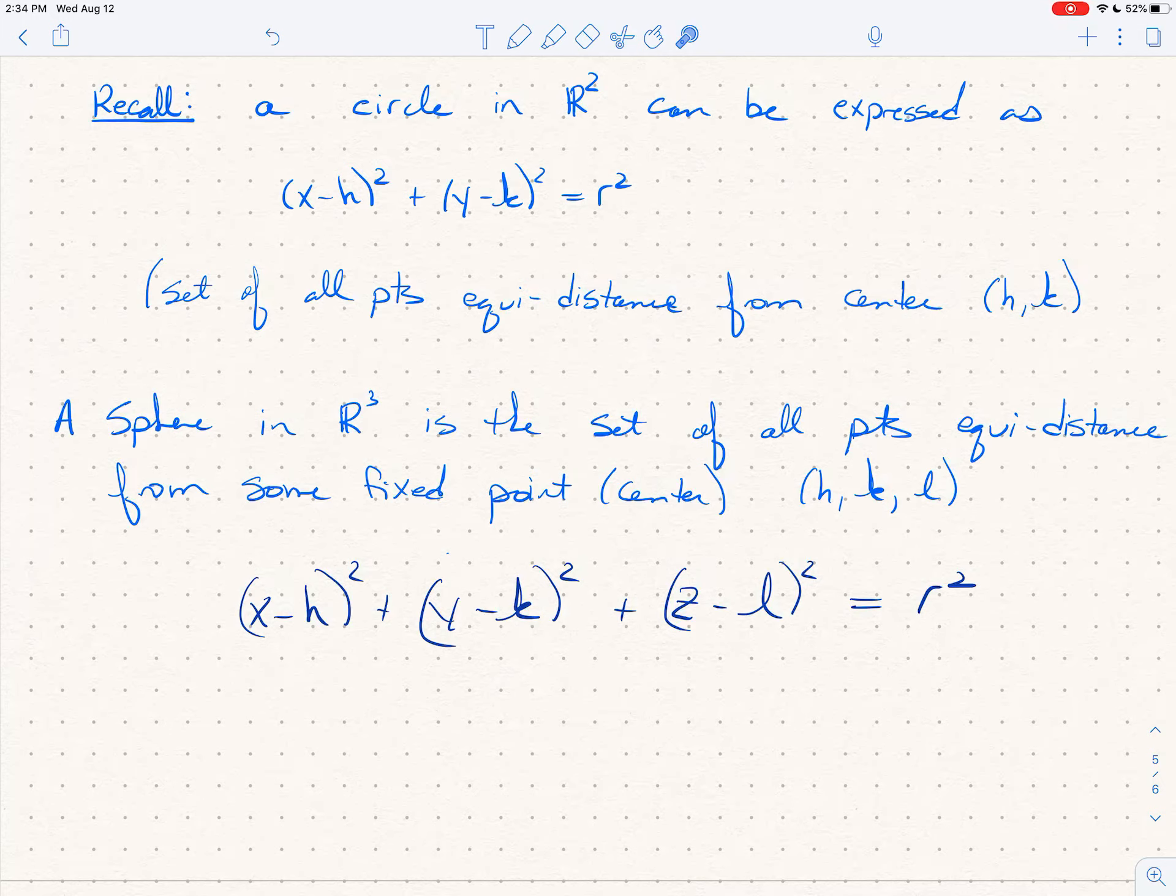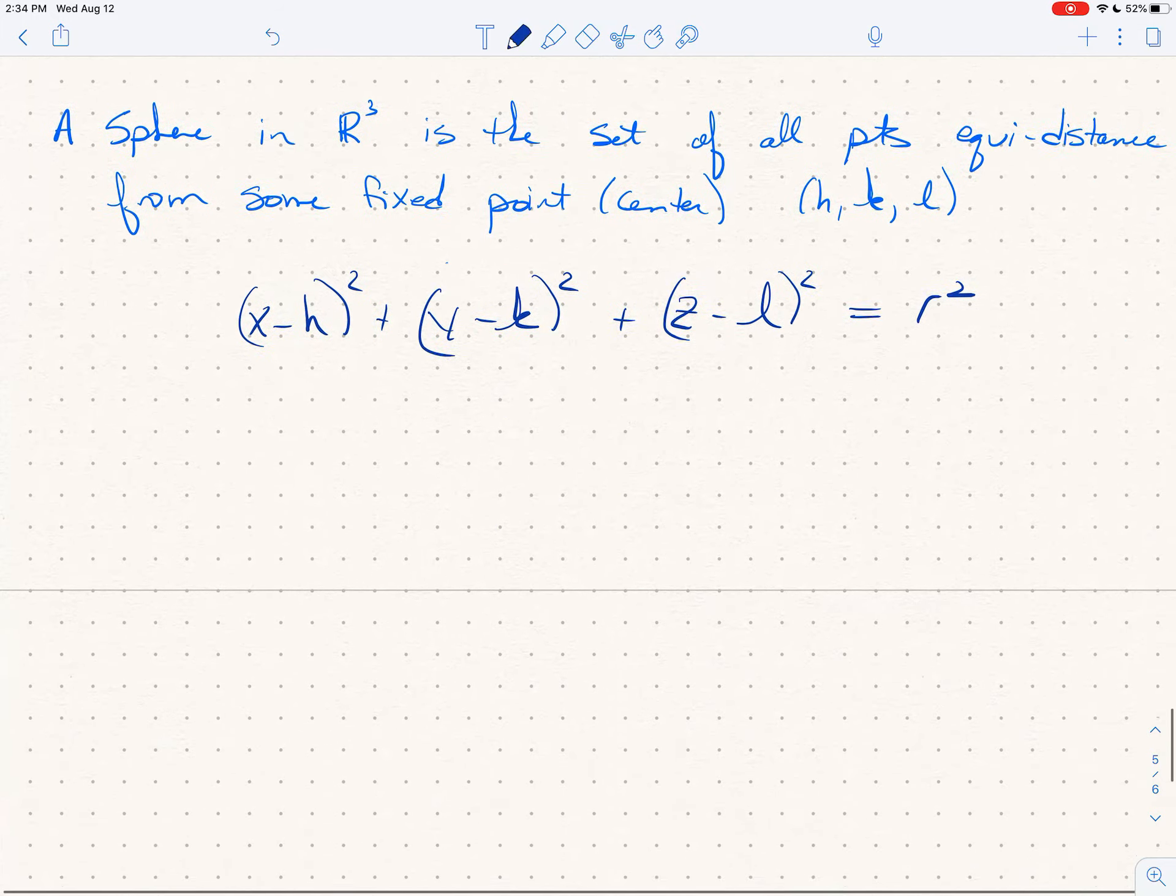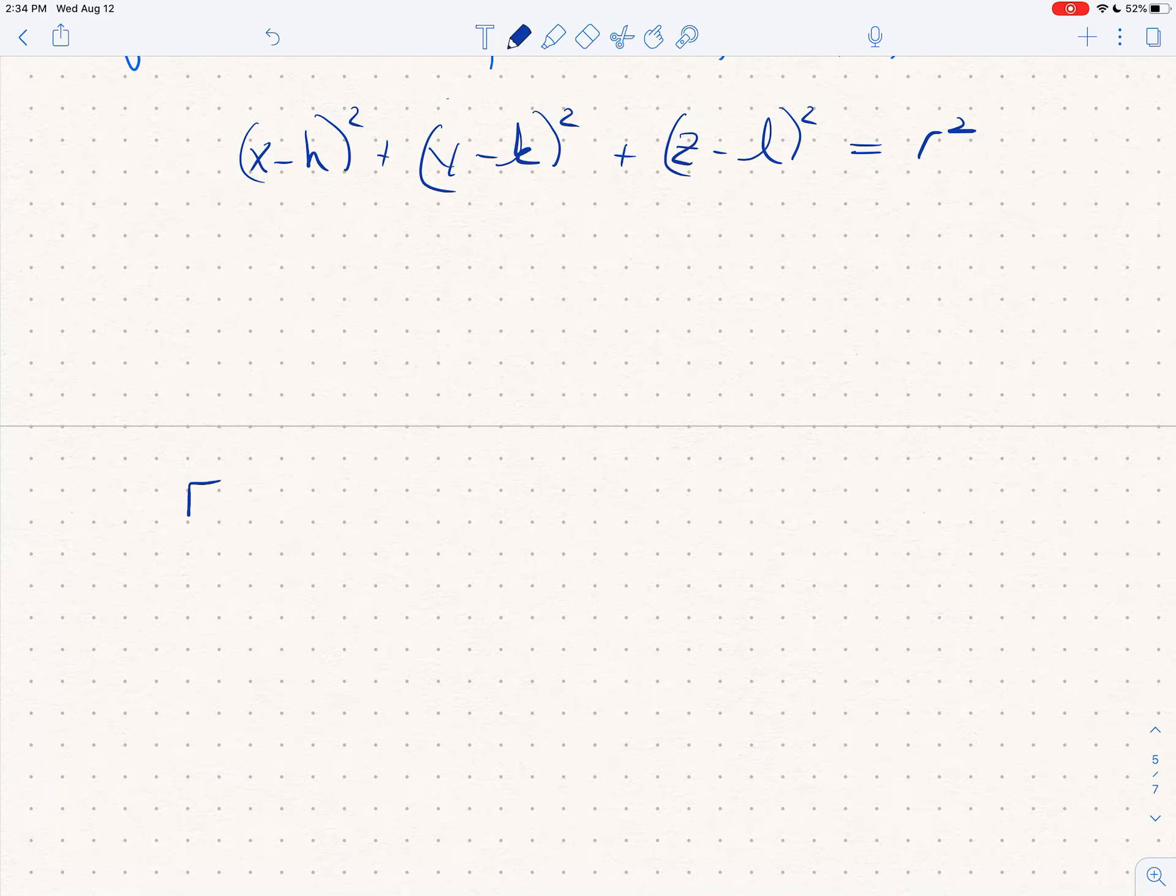So for a quick example—I don't know if we'll sketch it—but if I want to write down (x - 1)² + y² + (z + 3)² = 2, then you should instantly recognize that—well first off you should recognize this is a sphere, right? So know what it is, it's a sphere. Its center is (1, 0, -3) and its radius is r equals √2.